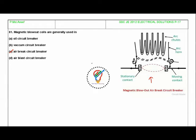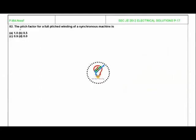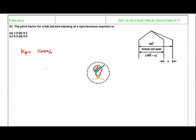Next question here is: the pitch factor for a full pitched winding of a synchronous machine is? The pitch factor formula is kp equals cos alpha by 2. This is the pitch factor formula.